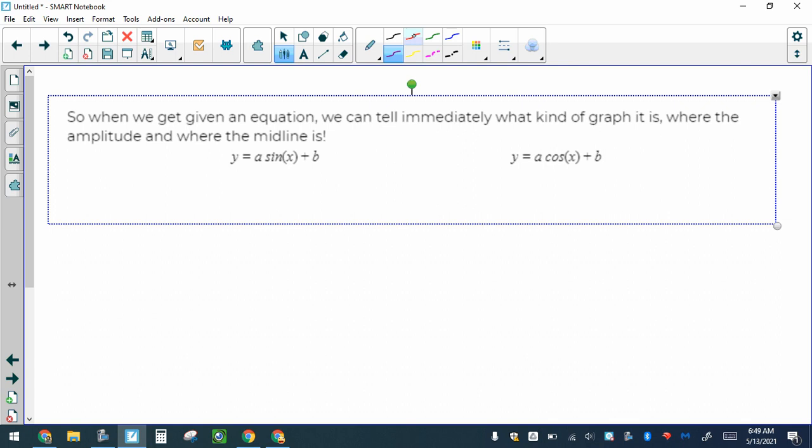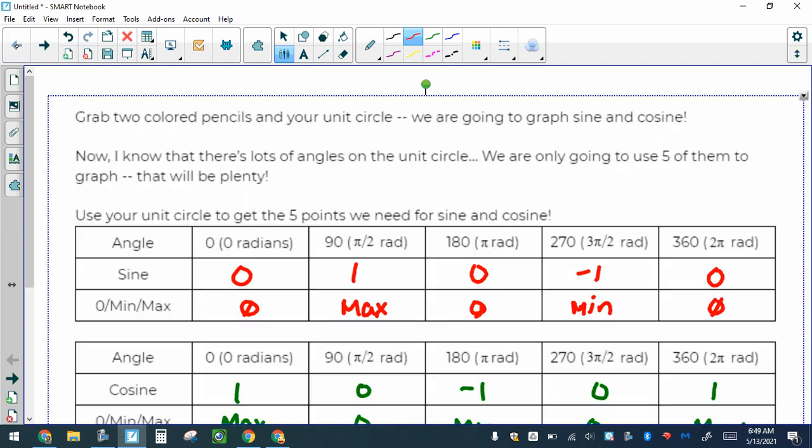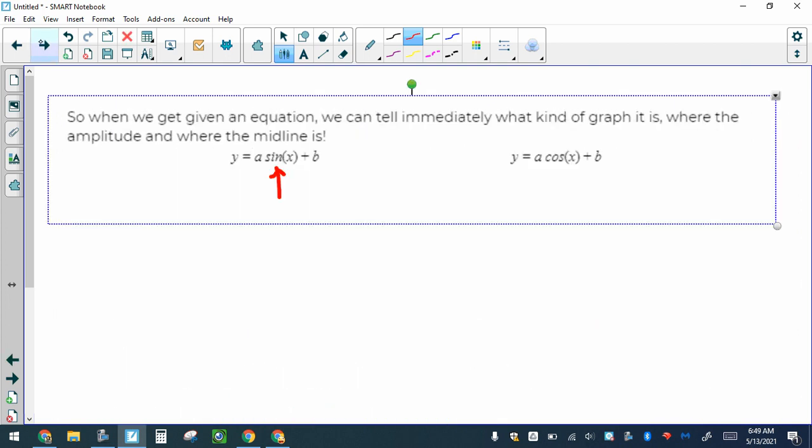So when we get given an equation, you can tell immediately what kind it is. You know what the midline is, you know what the amplitude is. If it's a sine graph, sine is always 0, max, 0, min, 0. Always and forever. 0, max, 0, min, 0. Always and forever, that is sine.